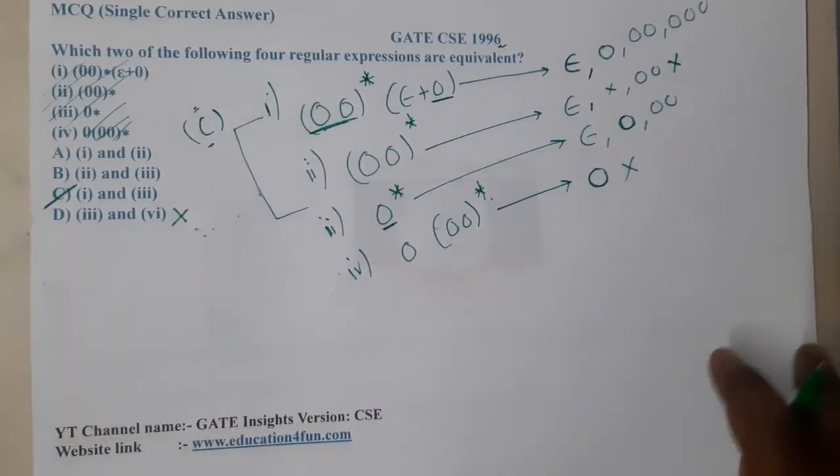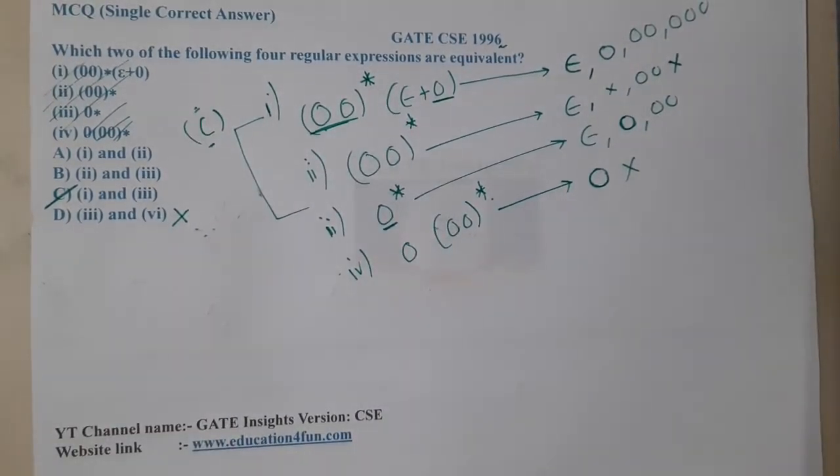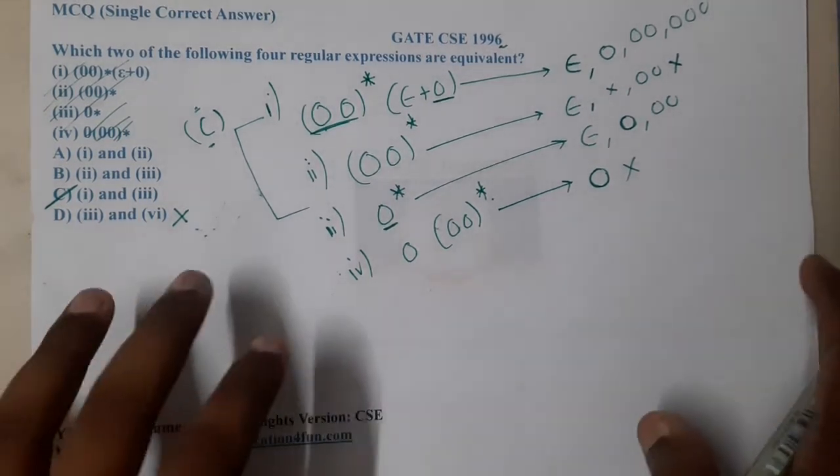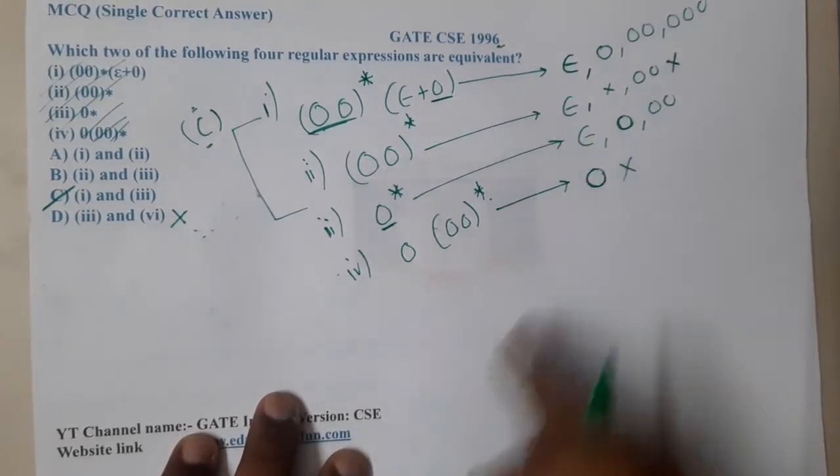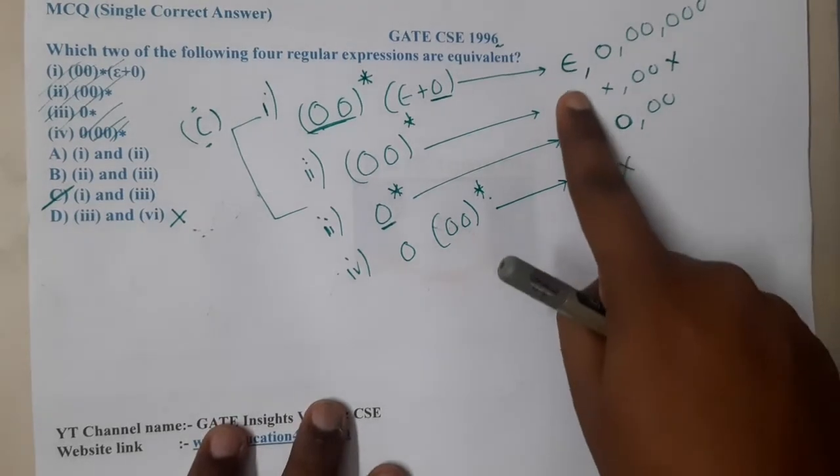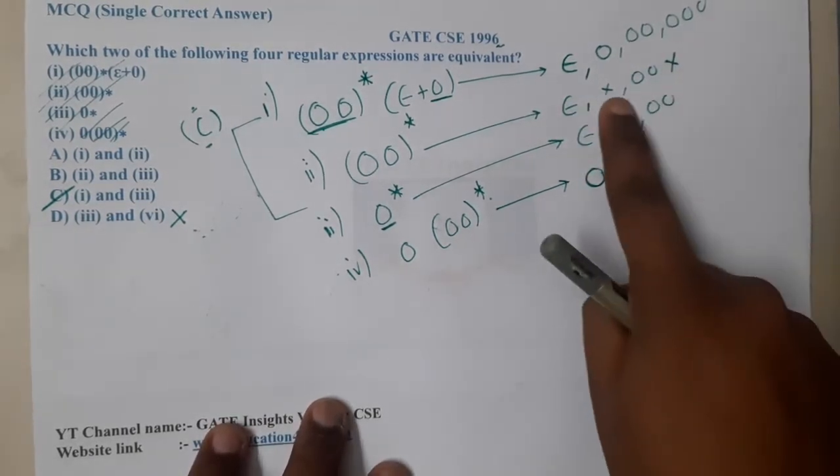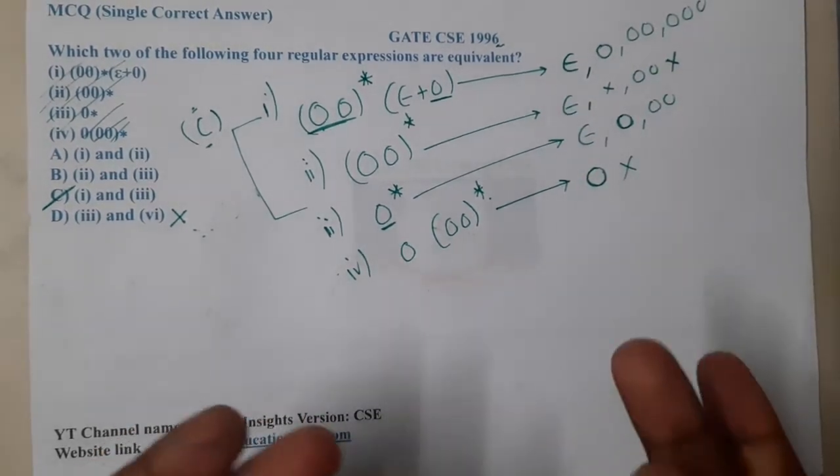I hope everyone got a clear idea. This question is directly based on regular expressions. Whenever you are working with regular expressions, always start with minimum values. Using that only, with first minimum I eliminated one option, with second minimum I eliminated second option. That's it, we got the answer.